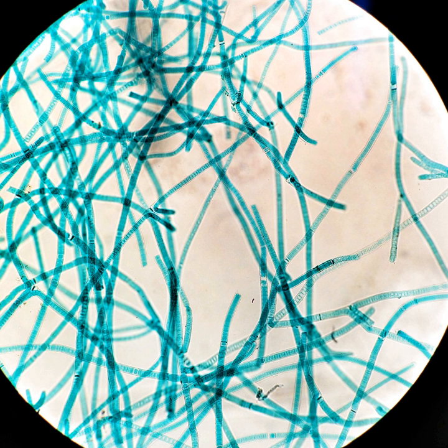Rhizobium inoculant is used for leguminous crops. Azotobacter can be used with crops like wheat, maize, mustard, cotton, potato and other vegetable crops.